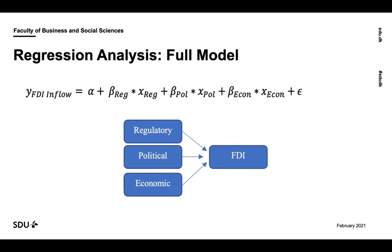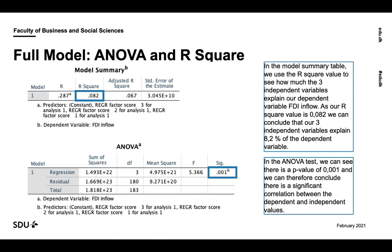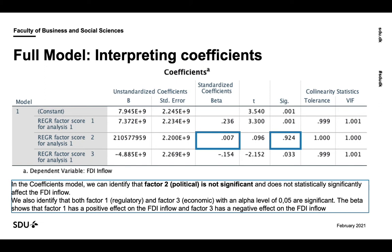We will now use the regulatory, the political, and economic factors and see how much they explain the dependent variable FDI inflow. In the model summary table, we can see that our R-squared value is 0.082 and we can therefore conclude that our three independent variables explain 8.2% of the dependent variable. Furthermore, in the ANOVA test there is a p-value of 0.001 and we can therefore conclude that there is a significant correlation between the dependent and independent variables. In the coefficient model, we see that factor 2, political, is not significant and does not statistically significantly affect the FDI inflow. We also identify that both factor 1, regulatory, and factor 3, economic, with an alpha level of 0.05 are significant. The beta value shows that factor 1 has a positive effect on the FDI inflow and factor 3 has a negative effect.